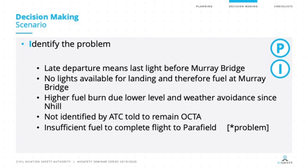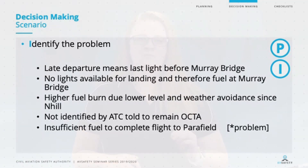Moving to the I — we need to identify the problems from those facts, and prioritise them. The late departure meant last light occurred before the aircraft could get to Murray Bridge. No lights at that airfield meant they were unable to refuel there. The higher fuel burn due to lower level and weather avoidance, combined with time spent being asked to remain outside controlled airspace by ATC, all compounded the situation. The key identified problem is insufficient fuel to conduct the flight to Parafield — that's why it has the asterisk.